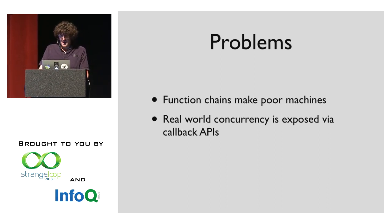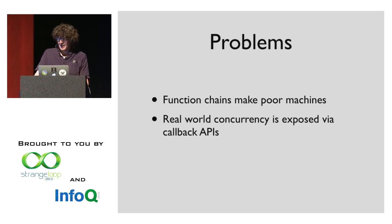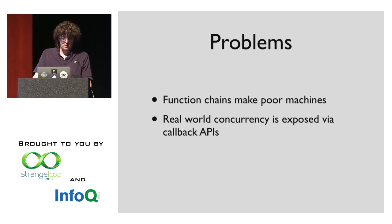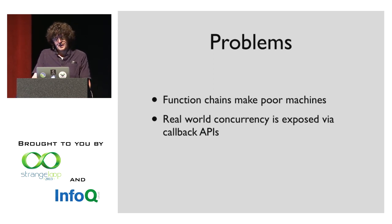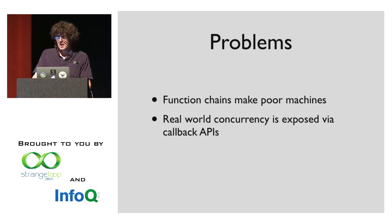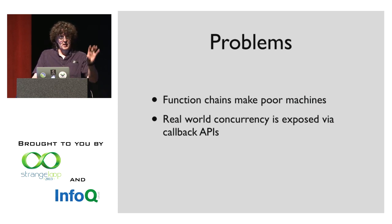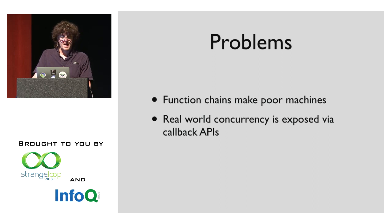The first problem we're trying to solve is the fact that function chains make poor machines. If you've heard me speak before about how objects are like little machines and they're not very good for doing logic, functions are like little units of logic that are bad for making machines. And it ends up that because we're moving to this world where people are trying to be more reactive, we have a ton of callback APIs on our hands, and we tend to connect to them with chains of function calls.